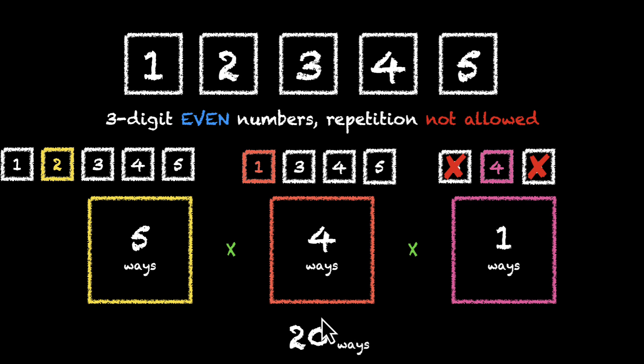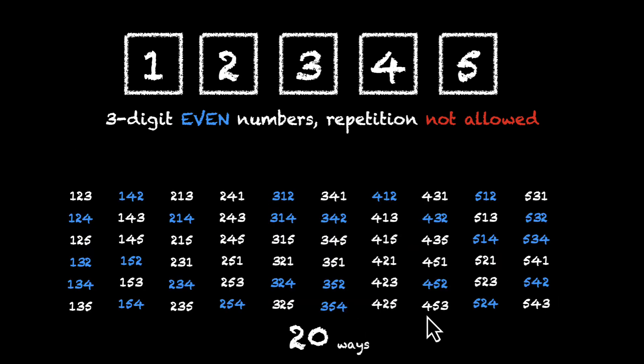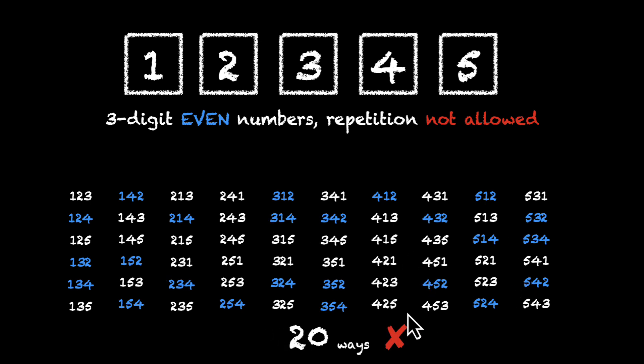Which means now we're saying there are 20 such numbers. But looking at the screen, I don't think we have 20 — I think we have more than 20 blue numbers. So are we wrong again? What's happening here?